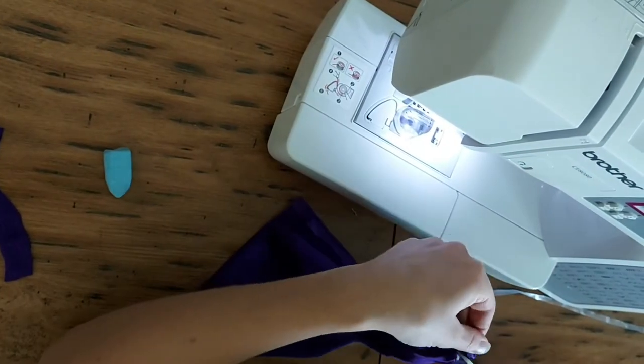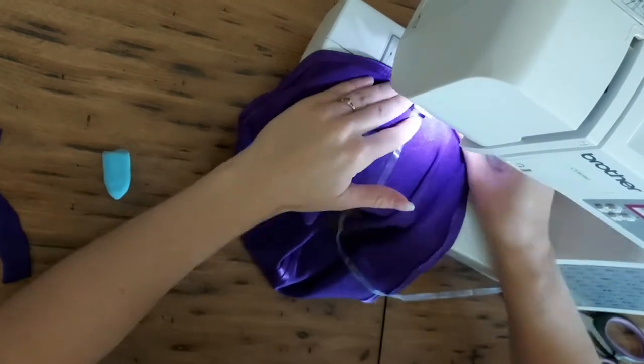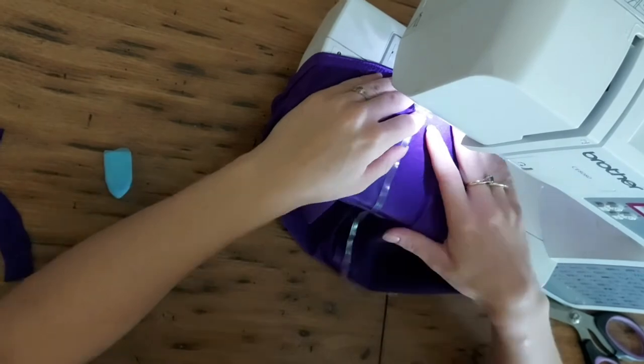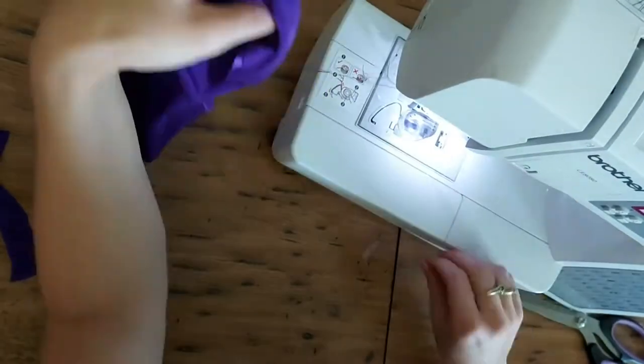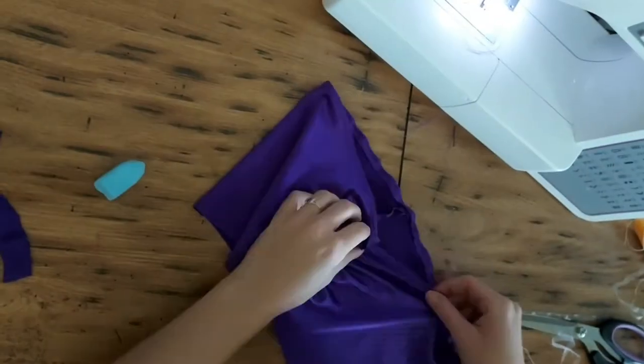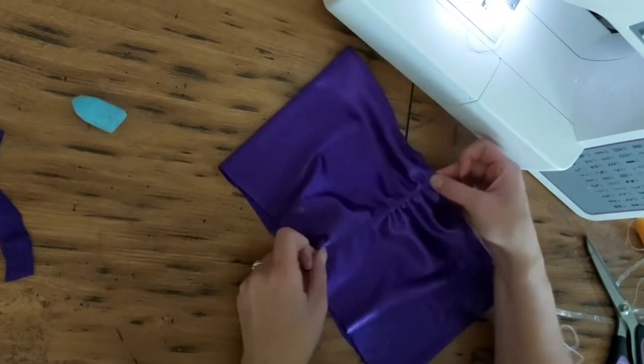Now I am using the same elastic to gather the front for that shell effect. I am sewing the elastic along the line onto the fabric and I am stretching the elastic very tight so when the elastic relaxes it creates that gathered effect on the front of the shirt. The tighter you pull the elastic, the tighter the scrunch is going to be on the front.